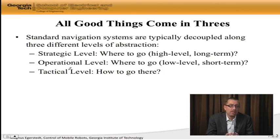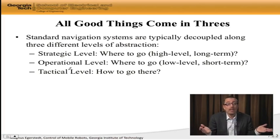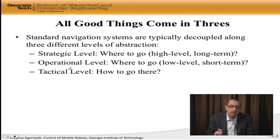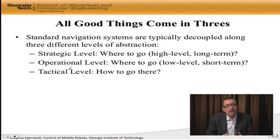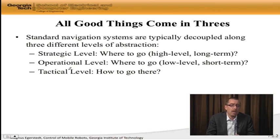The strategic level is high level — where do we go? Recall, for instance, we have go-to-goal behaviors and we have a goal point. Well, where did that goal point come from? Who decided that that's reasonable? That happens at the strategic level where the high level decisions are being made. Then at the operational level, you're trying to figure out, okay, I know that there is a goal point somewhere out there — where do I go now? This is a short-term, low-level planning problem. In many ways, we can think of our x dot equal to u model as living at the operational level.